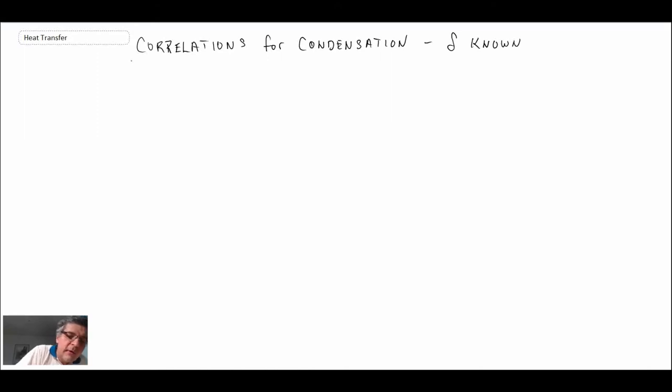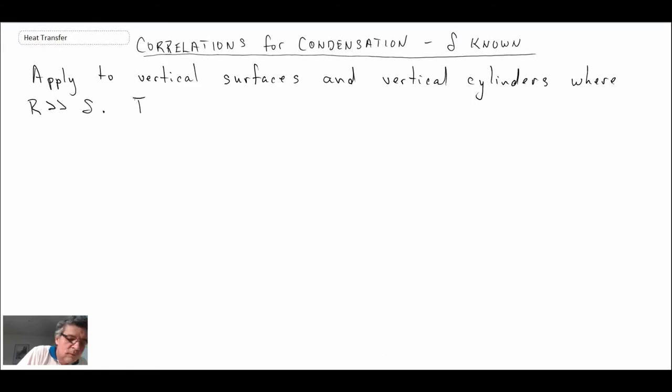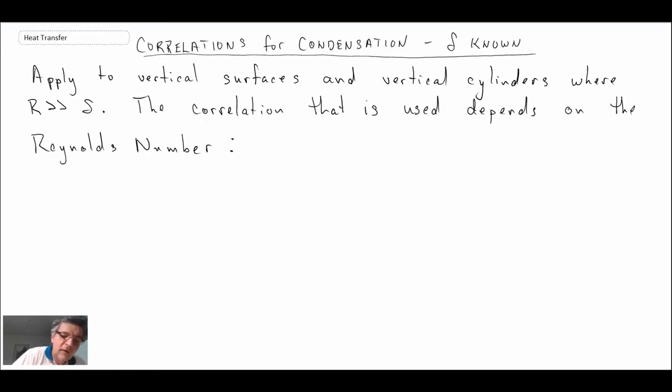We're going to begin assuming that we know the thickness of the film that is forming on the surface that is cooled, the condensation film. These correlations can apply to either a vertical plate or to a vertical cylinder, provided that the radius is much larger than the film thickness that forms on the vertical plate.